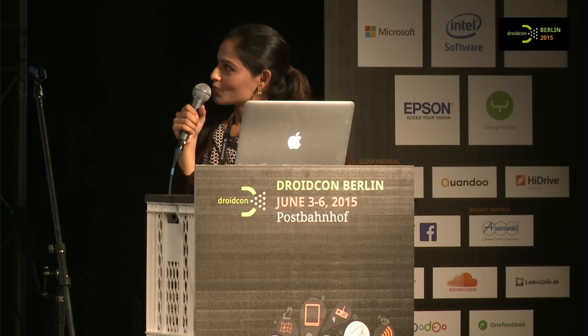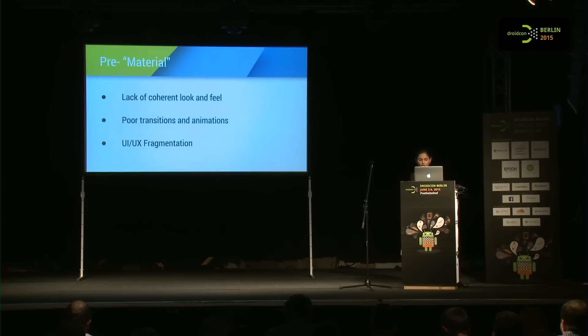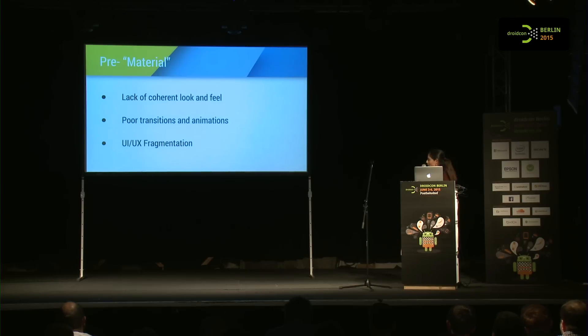This is the pre-material era and its problems. If you've been an Android user for a while, you already know there wasn't any structure or unified design aesthetic in Android apps — not like there was for iOS. It offered a lot more flexibility but also a lack of coherent look and feel, especially across multiple form factors. There was also a lack of good guidelines for transitions and animations, plus UI and UX fragmentation across carriers and different manufacturers who tried to customize the default Android behavior.